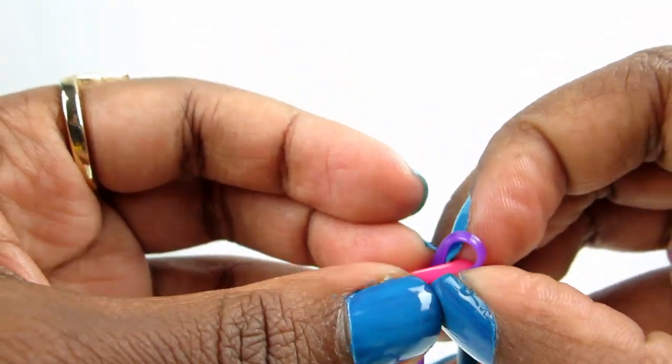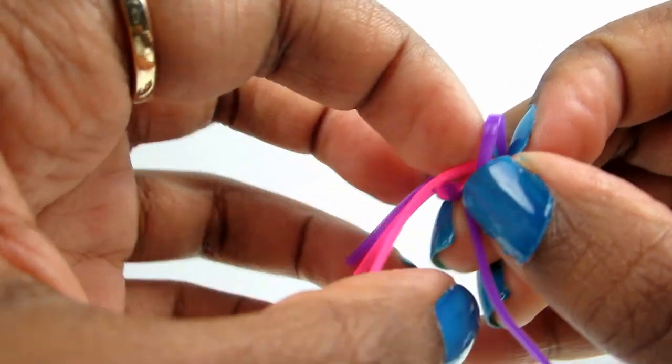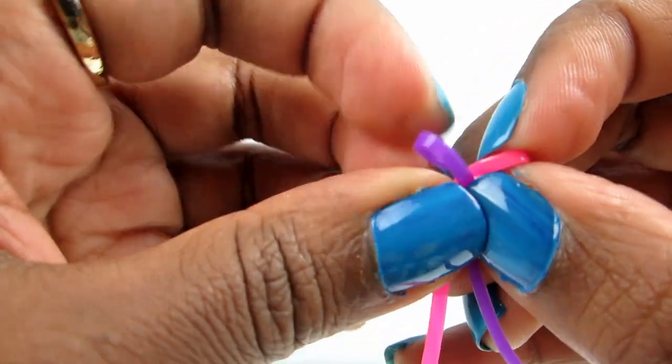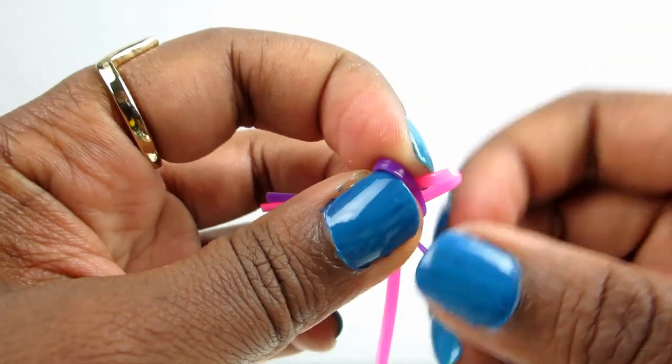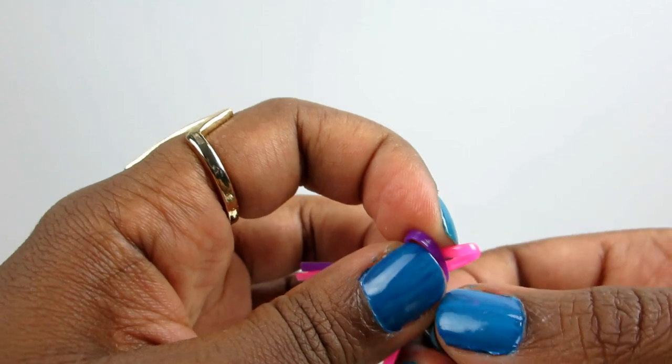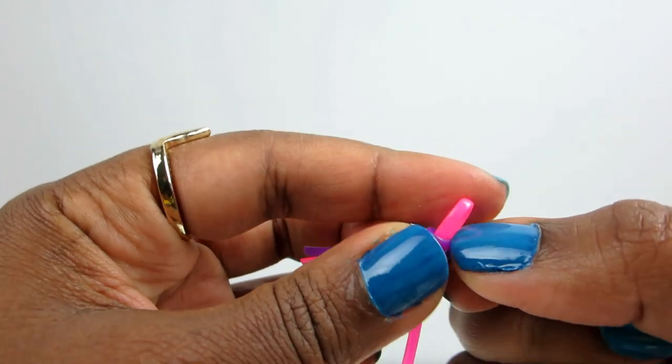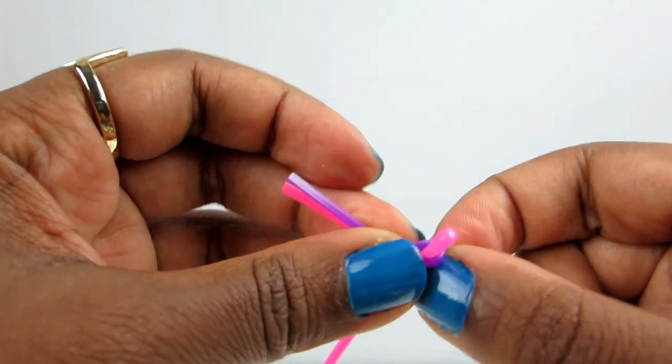So you can see that I put the pink through the purple. And I'm going to hold down here and I'm going to pull the purple gimp down with the pink rabbit ear going through it.